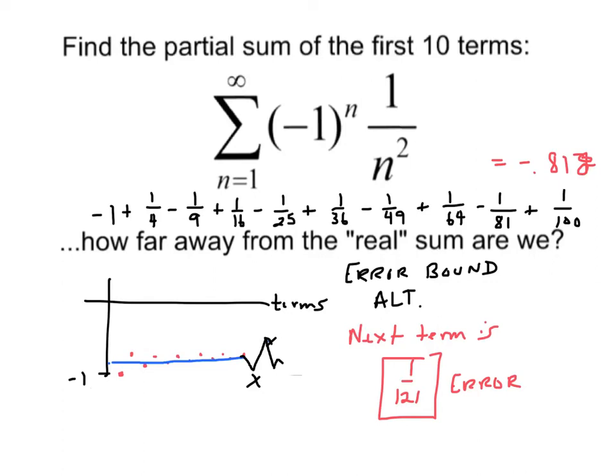Of course, the actual error is less than that. But as I said, this is the bound. So right now, we're within 1 divided by 121. We're within about 8 thousandths of the actual sum.